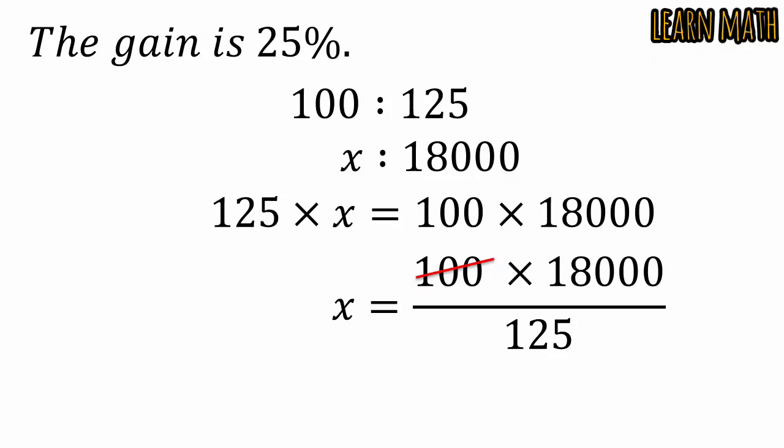So we will get 4 and here 5. Now divide 18,000 by 5 and we will get 3,600. Multiply with 4, 14,400 is the required solution. Thank you so much.